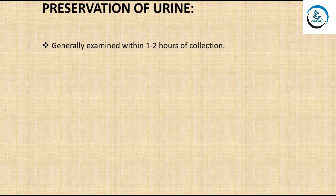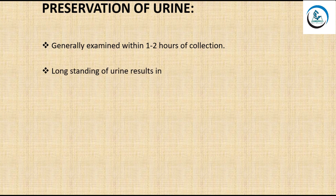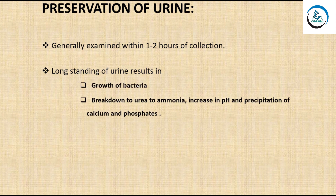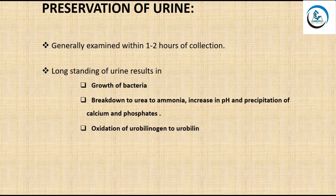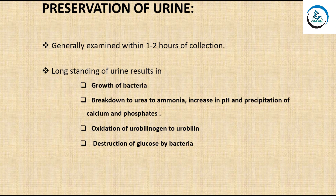Urine is generally examined within one to two hours of collection. If there is a delay, it must be preserved. When urine is allowed to stand for long hours without a preservative, bacteria grow and break down urea to ammonia, causing an increase in pH and precipitation of calcium and phosphate.